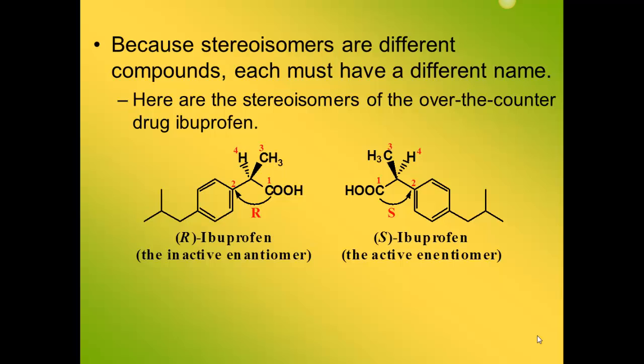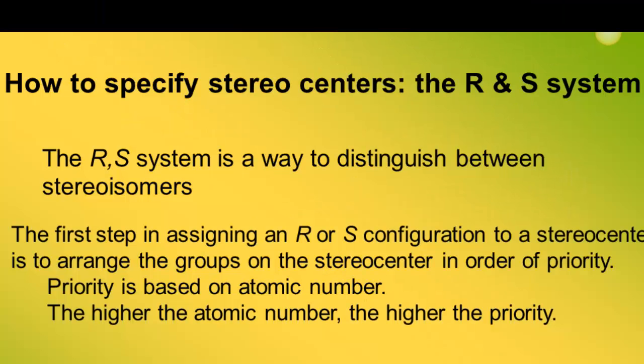Shown here are the stereoisomers for ibuprofen. One is called R and one is called S. The first step in the R and S system assignment is to prioritize the groups around the stereocenter. Priority is based on atomic number — the higher the atomic number, the higher the priority.